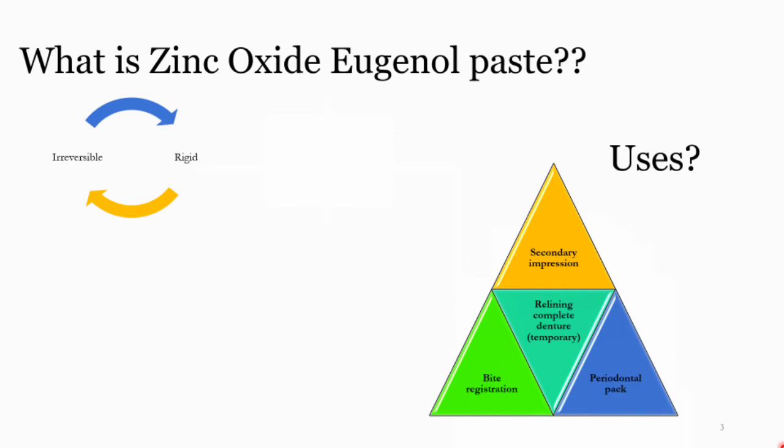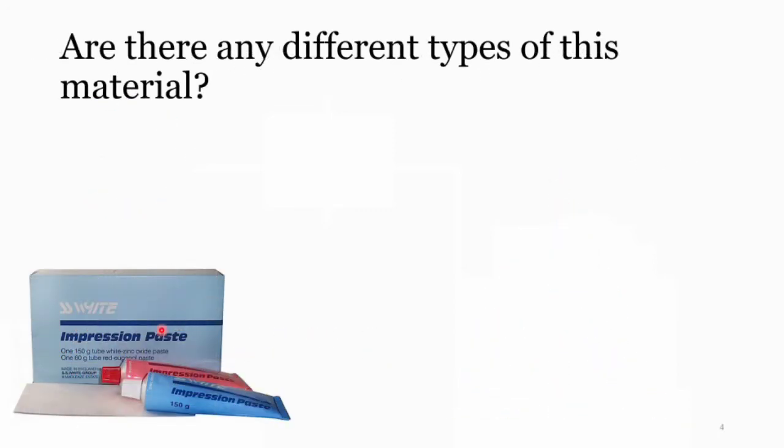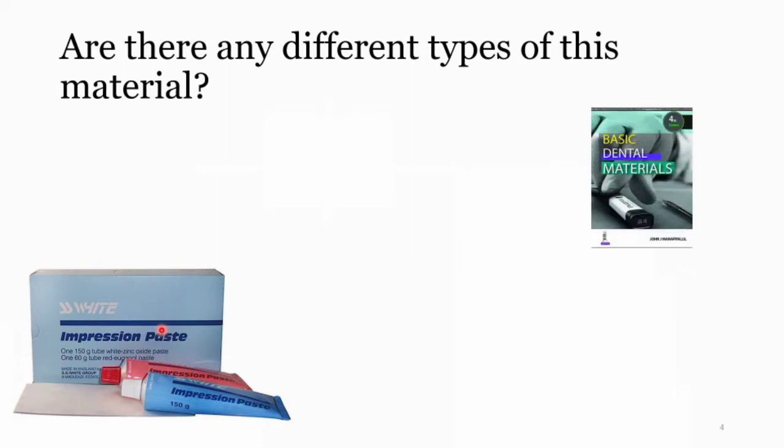It can also be used for periodontal pack, which I'll explain in detail later. The ADA specification number recognized for this material is number 16. You should know these ADA specification numbers for exam purposes. There are two types: Type 1 is hard type and Type 2 is soft, based on the consistency of the material.